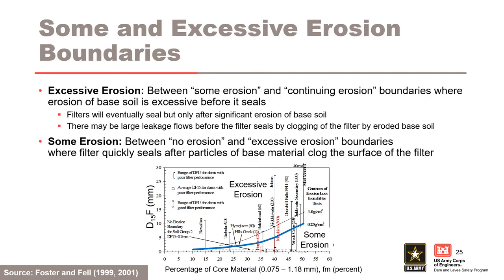Some and excessive erosion boundaries. These boundaries were estimated based on a comparison of laboratory filter tests to case history data of poor filter performance, which showed progressive sealing of the filter zone. The excessive erosion boundary occurs between the some erosion and continuing erosion boundaries, where erosion of base soil is excessive before it seals. Filters will eventually seal, but only after significant erosion of the base soil, and there may be large leakage flows before the filter seals by clogging. The some erosion boundary occurs between the no erosion and excessive erosion boundaries, where the filter quickly seals after particles of the base material clog the surface of the filter.